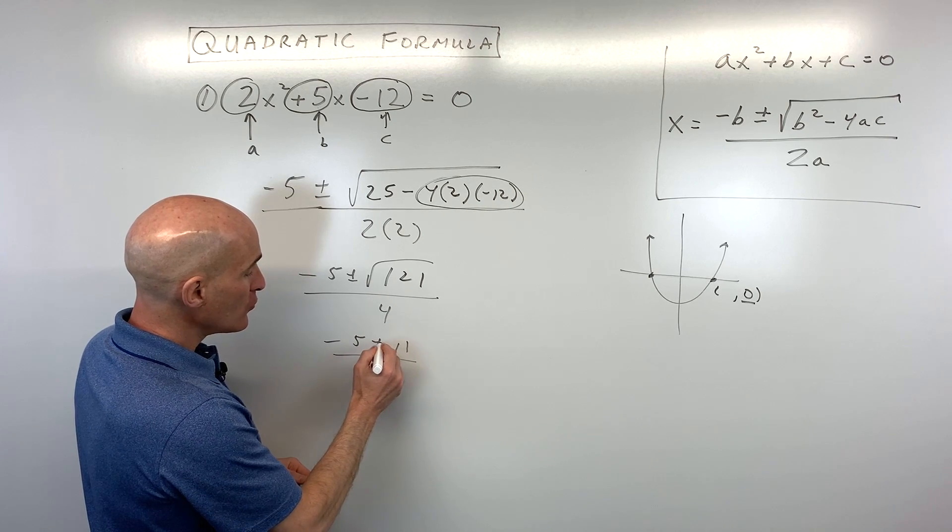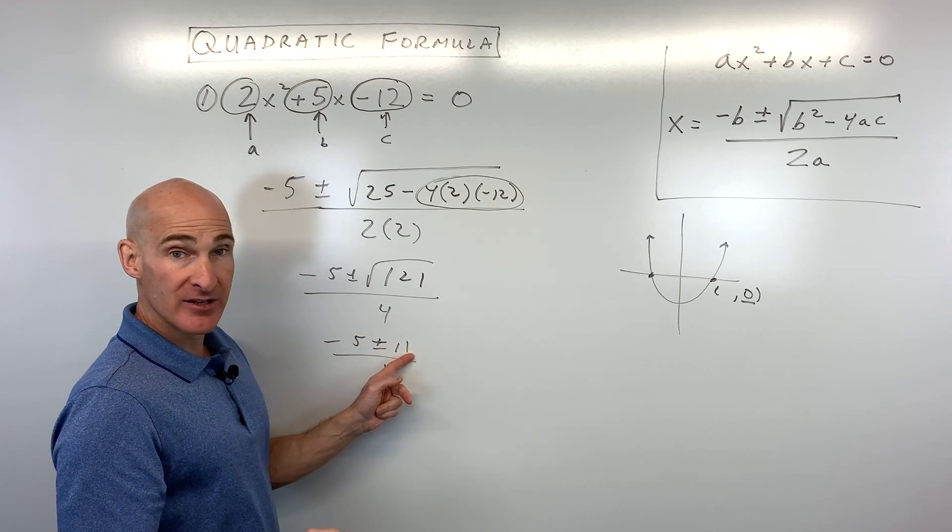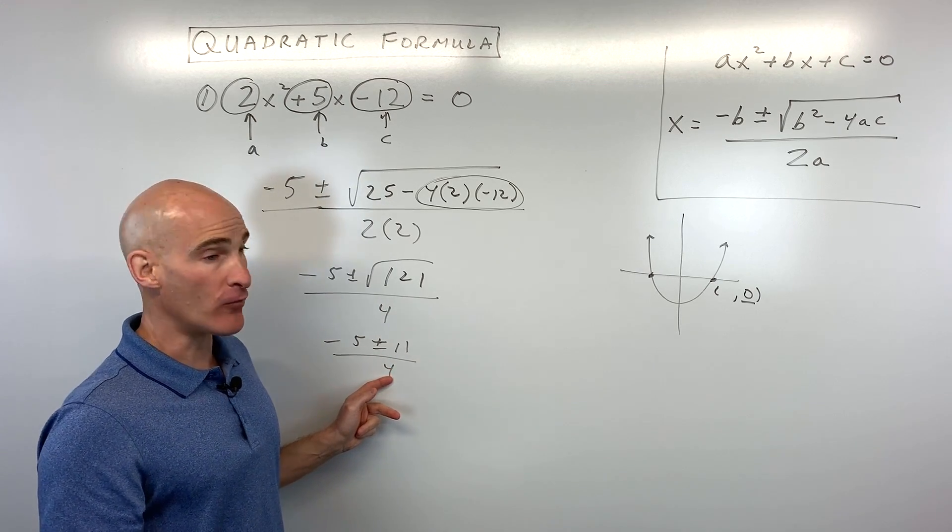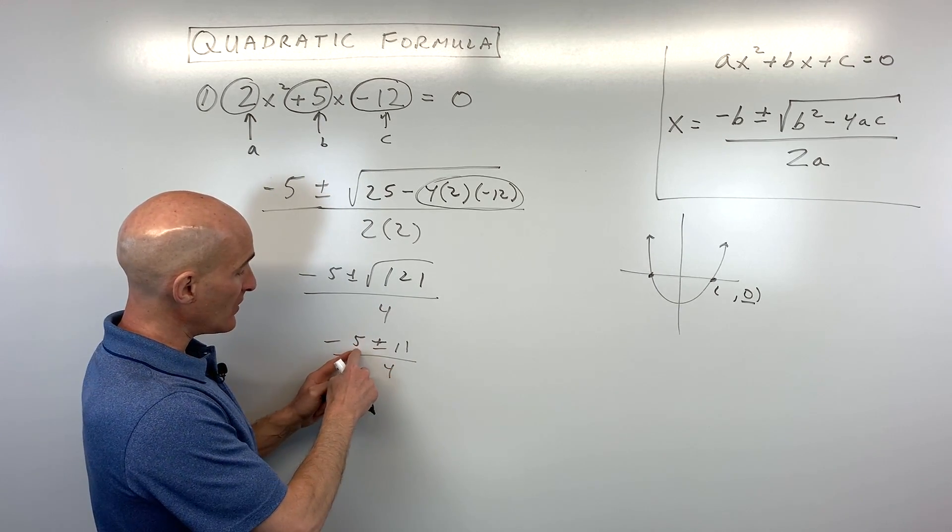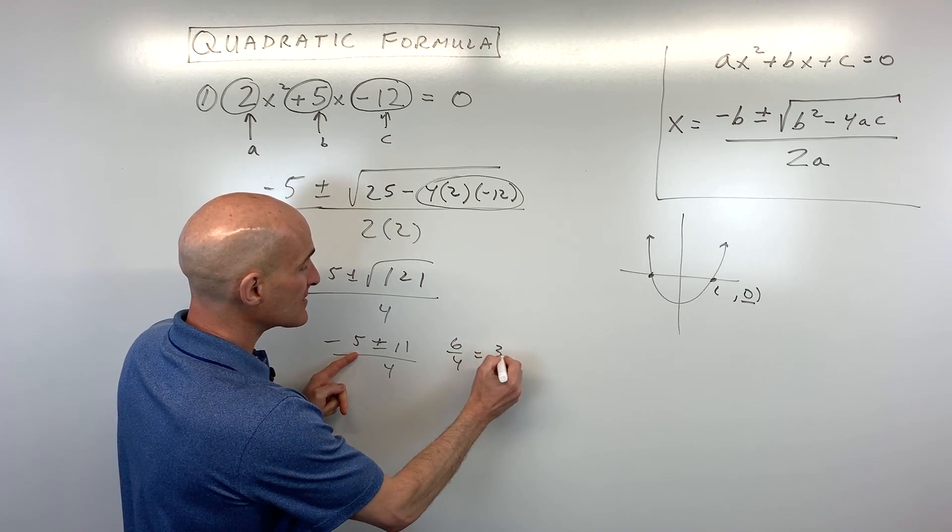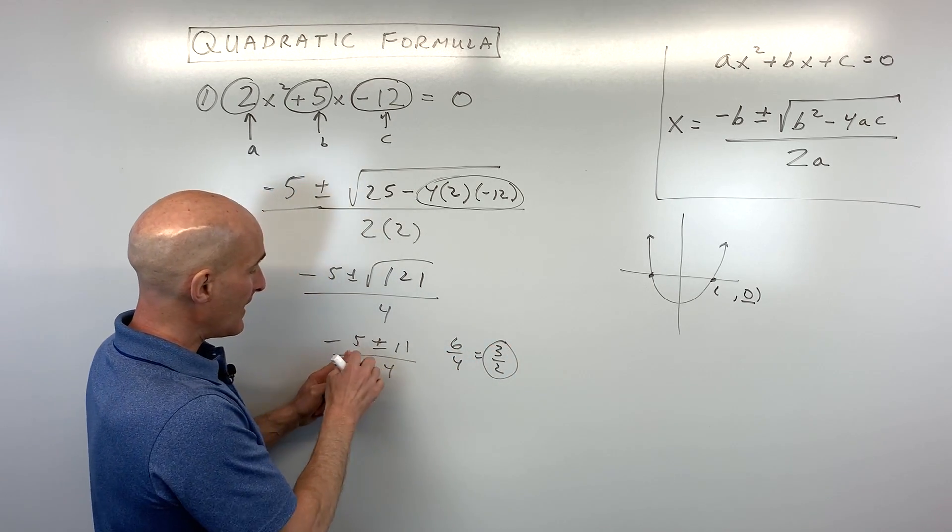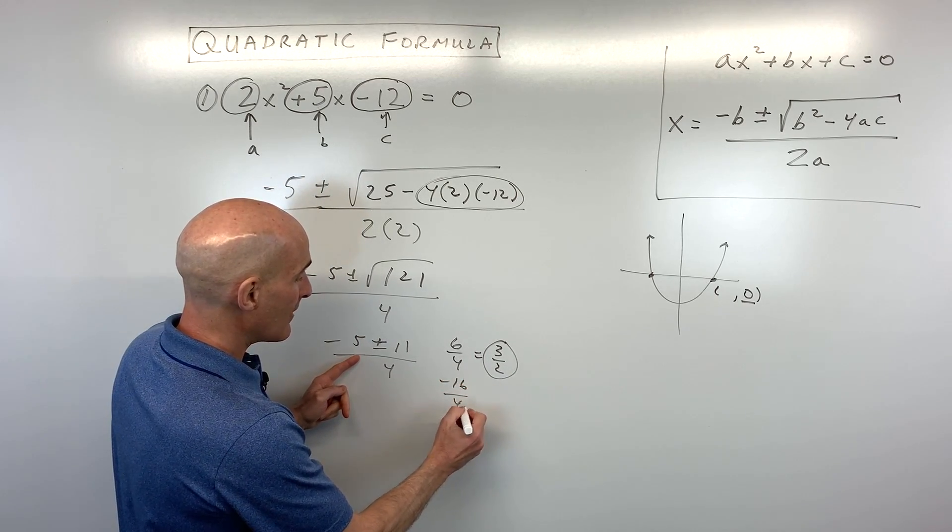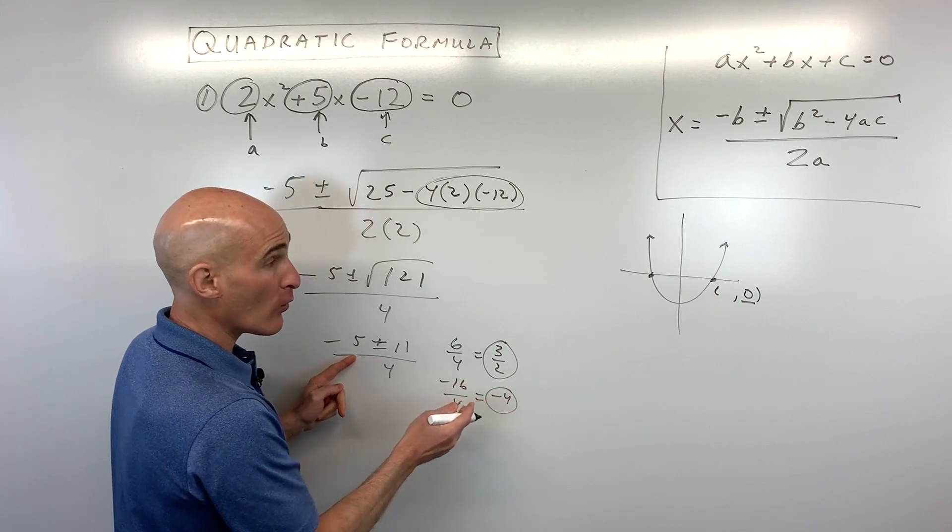So now look what we have. We have two problems to solve. We have negative 5 plus 11, all divided by 4, and negative 5 minus 11, all divided by 4. Let's do the plus one first. So negative 5 plus 11 is 6, divided by 4. That's 3 over 2, and negative 5 minus 11, that's negative 16, divided by 4, which is negative 4.